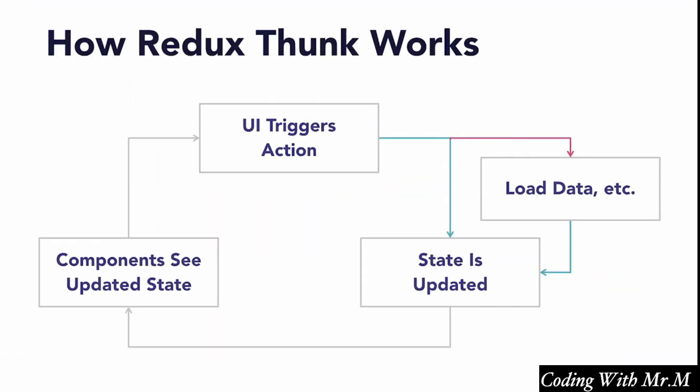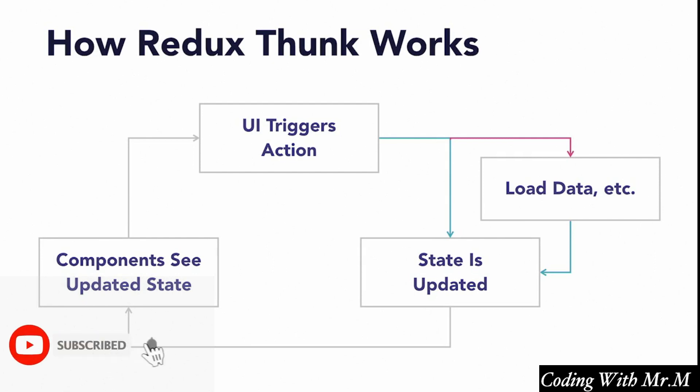As I said before, Thunks basically add a fork to our basic unidirectional data flow. Instead of dispatching only bare Redux actions, our components can also dispatch Thunks, which perform asynchronous operations and can dispatch their own actions or Thunks. The point of all of this is that it allows us to almost completely remove our side effect logic from our components, thus increasing our separation of concerns.